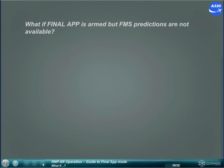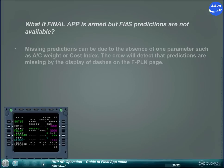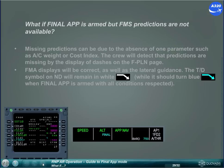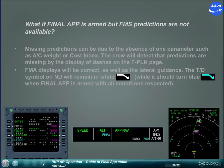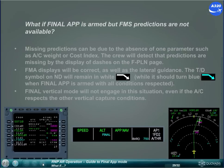What if Final Approach is armed, but FMS predictions are not available? Missing predictions can be due to the absence of one parameter such as aircraft weight or cost index. The crew will detect that predictions are missing by the display of dashes on the flight plan page. FMA displays will be correct, as well as the lateral guidance. The top of descent symbol on the ND will remain in white, while it should turn blue when Final Approach is armed with all conditions respected. The final vertical mode will not engage in this situation, even if the aircraft respects the other vertical capture conditions.